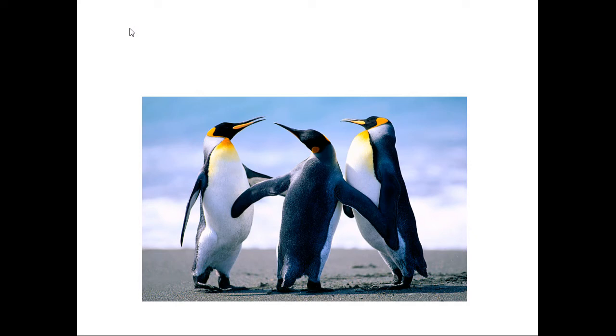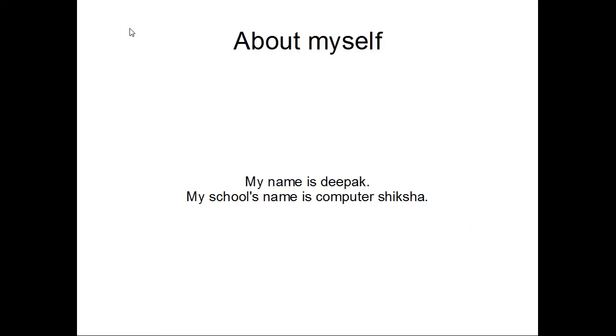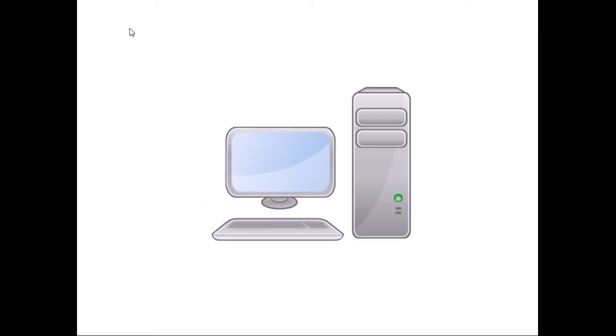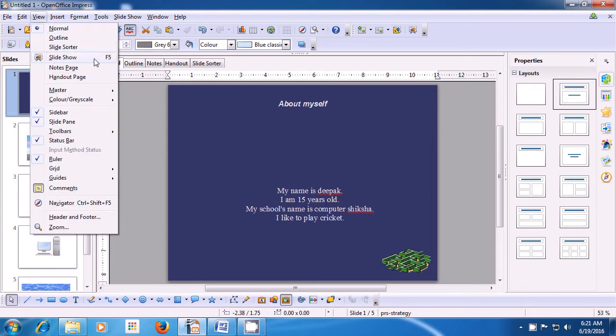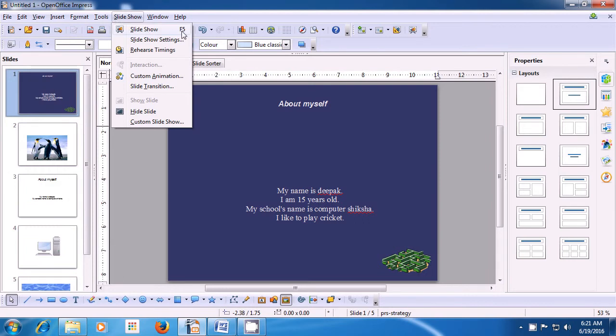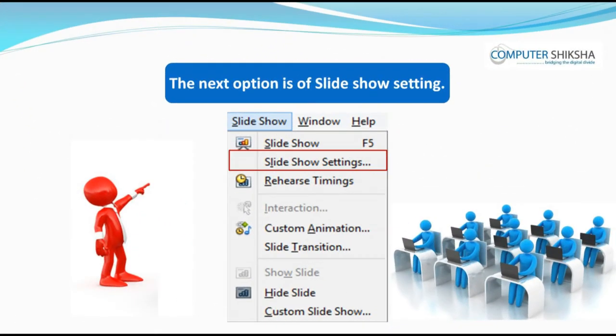Use the down arrow key to see the next slide and the up arrow key to go back. Press the ESC button (top left corner of keyboard) to exit the slideshow. You can also start the slideshow from the View menu or using the shortcut F5. The next option is Slideshow Setting.